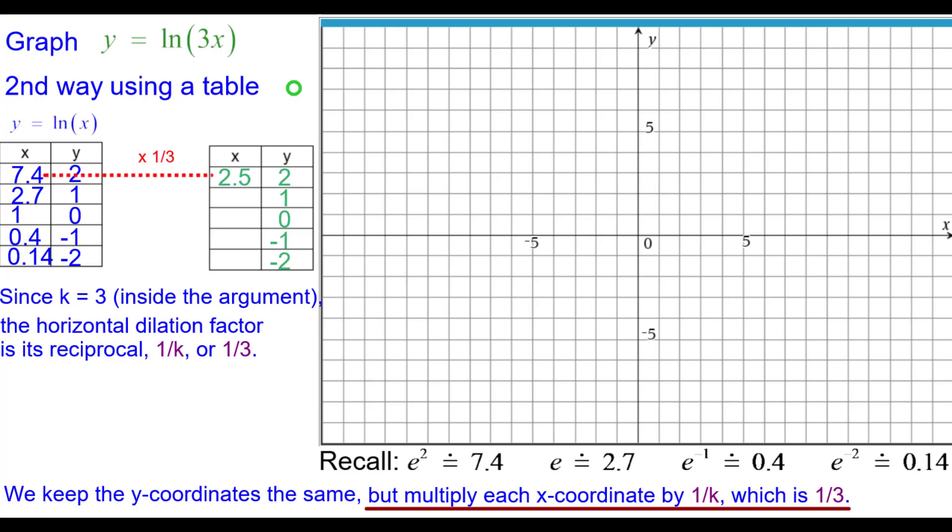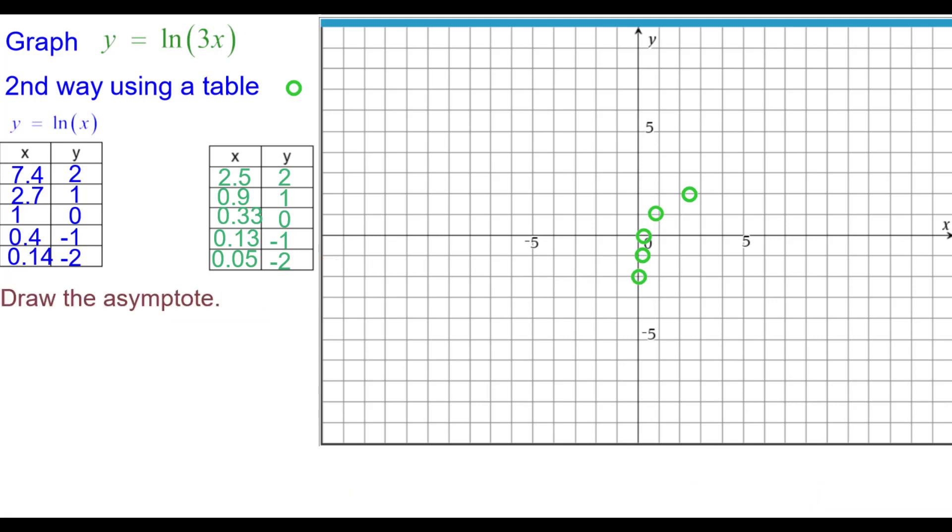So 7.4 times a third is about 2.5 so we'll plot 2.5 comma 2. A third of 2.7 is about 0.9 comma 1. A third of 1 is a third so over a third up 0 and then a third times each of the other ones. Draw the asymptote the y-axis the line x equals 0 and then connect the points.